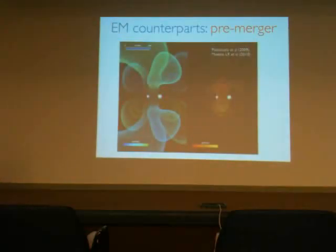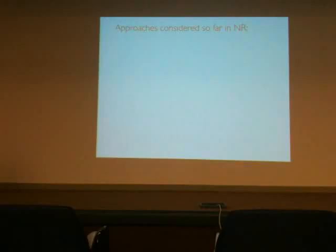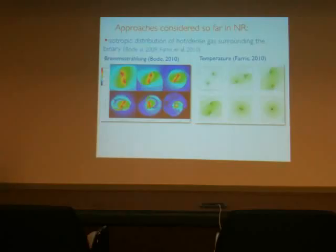I have to switch now to the next part of my talk, electromagnetic counterparts. So as we see, there is a pre-merger and a post-merger picture of this process. And what has been done so far is in numerical relativity. So by that I mean by taking full Einstein equations and relativistic hydrodynamics, if nothing else, and see what happens. And people have considered isotropic distribution of hot and dense gas surrounding the binary. There's been two works. One is by Tania Bode, et al., and then Farris et al. And I think Tamara will discuss this in the afternoon, so I will not say much about this.